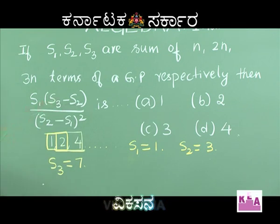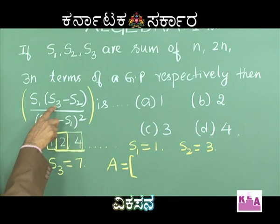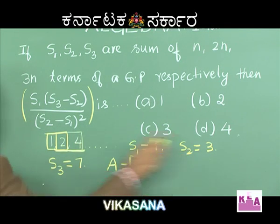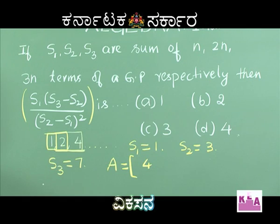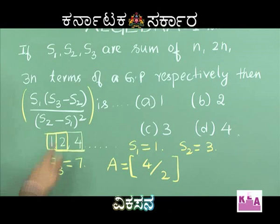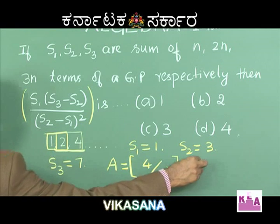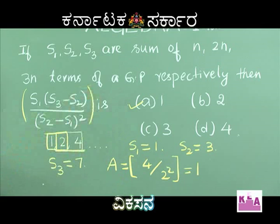S1 into S3 minus S2: S1 equals 1, S3 equals 7, S2 equals 3. So S3 minus S2 is 7 minus 3 equals 4. S2 minus S1 is 3 minus 1 equals 2, and we square it: 2 squared equals 4. So 4 divided by 4 equals 1. That clearly says option A is correct. It is very simple — using common sense to solve the problem.